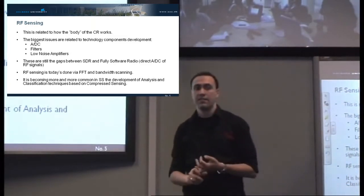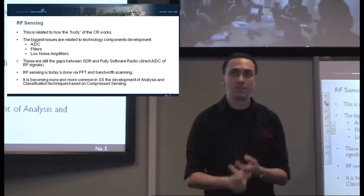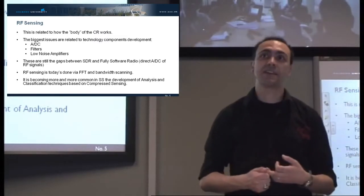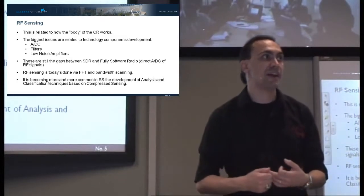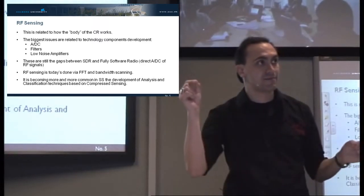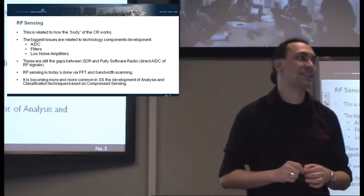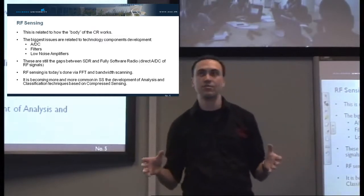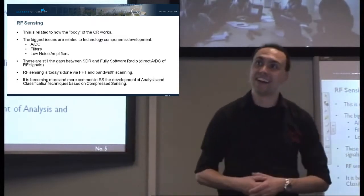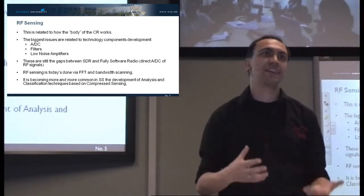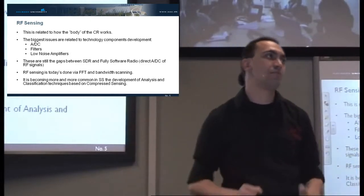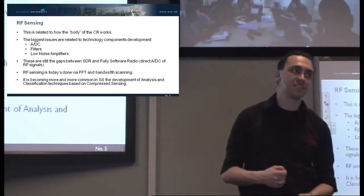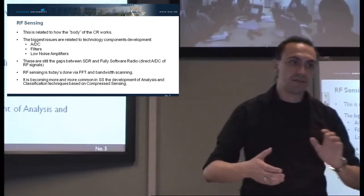RF sensing involves digitalization of the signal, filtering, and low-noise amplifiers. Having amplifiers that operate across an extremely wide band while remaining in the linear region is quite difficult. So what we do today, if we want to cover an extremely wide band, is split it across multiple transceivers, because we cannot ensure linearity of the components across the full bandwidth — and working with non-linearly distorted signals is something we want to avoid.